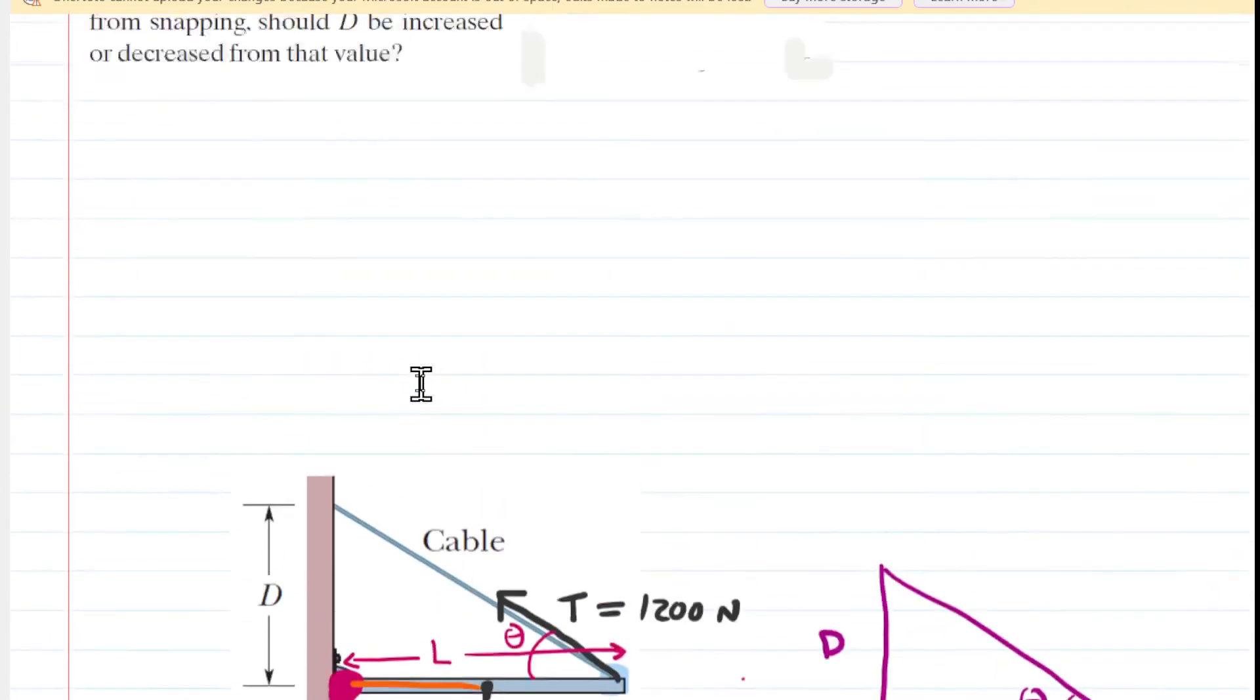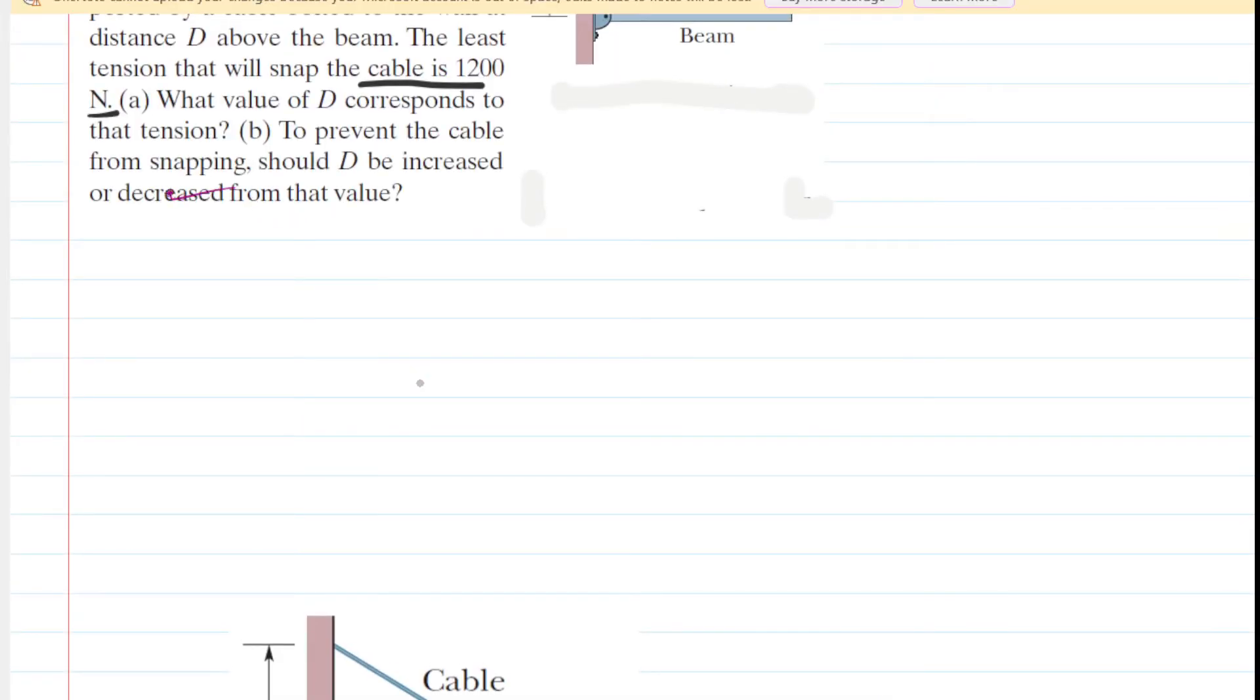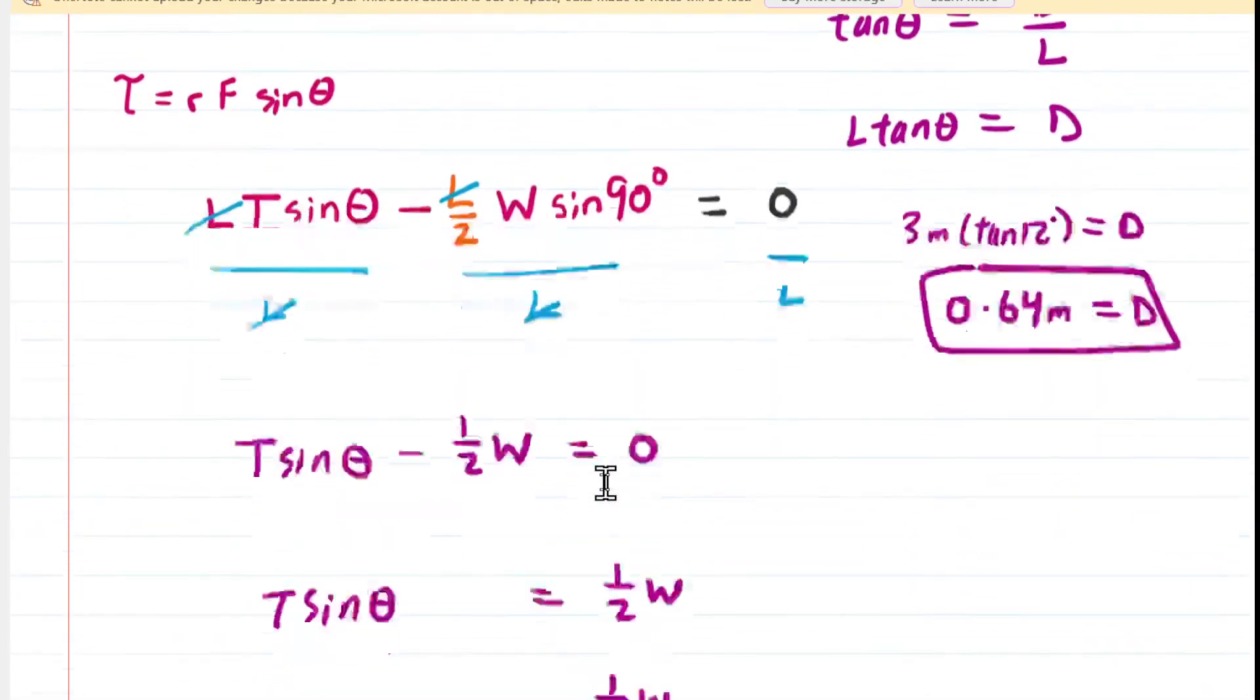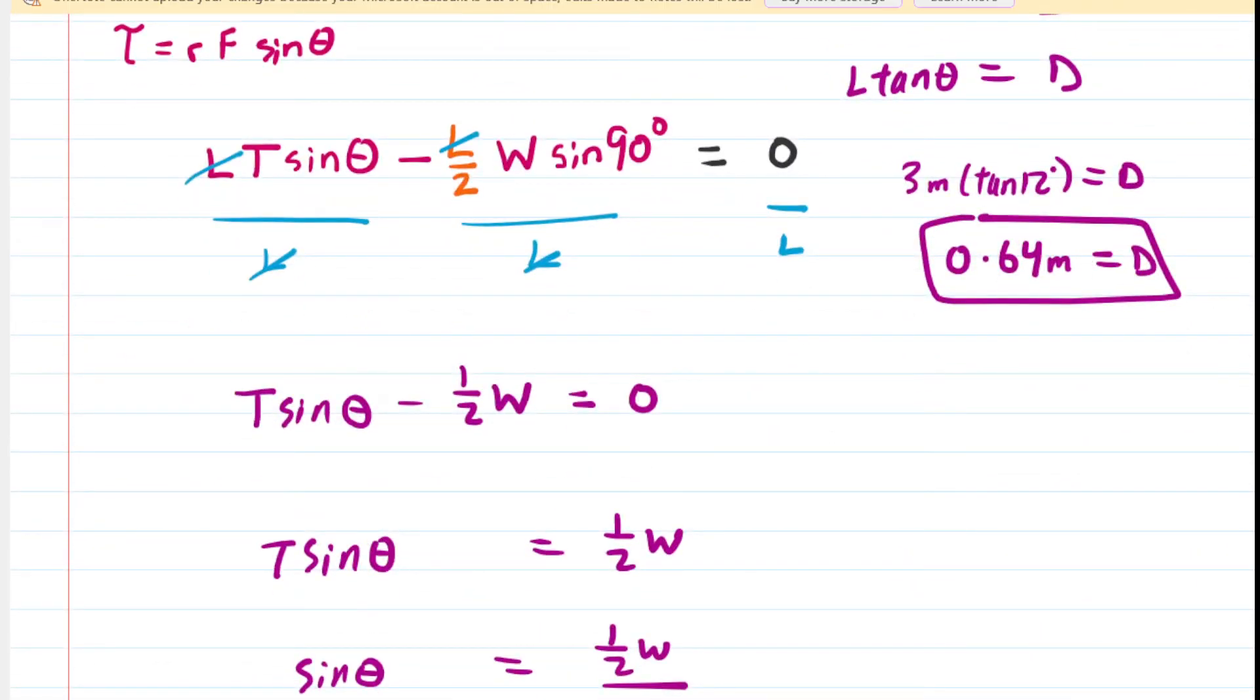Let's go and read part B, which asks us, to prevent the cable from snapping, should d be increased or decreased from that value? And perhaps to answer that, we can go back and look for the equation that involved the tension.